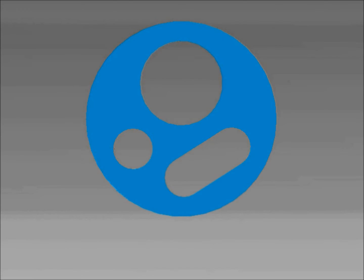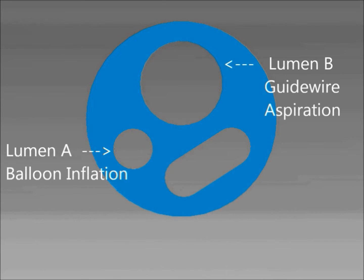The catheter extrusion uses three lumens, starting with lumen A, which is used to inflate the balloon, lumen B, a multi-functional lumen used for both guide wire insertion and aspiration, and finally lumen C, used for infusion of drug.